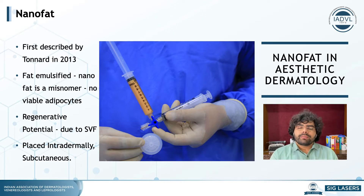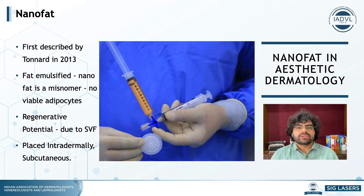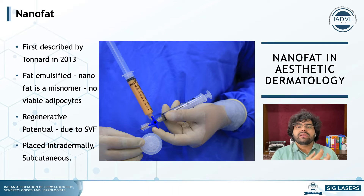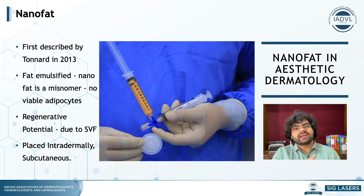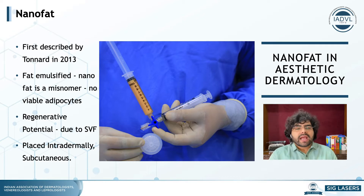NanoFat was first described by Patrick Tonard in 2013 — that was when the first paper came out. Before that, in 2001, Zuc et al had described adipose derived stem cells in adipocytes and the large quantities available, but they were difficult to isolate. It was done in laboratories using collagenase to dissolve collagen in adipocytes, then culturing the stem cells — a very tedious process.